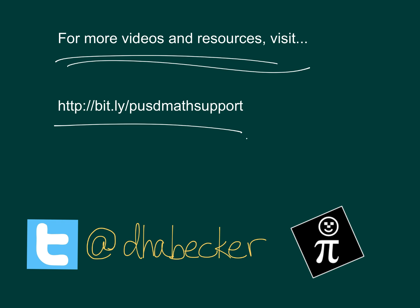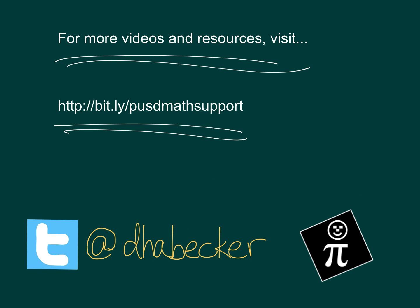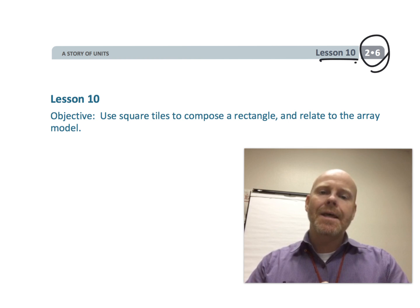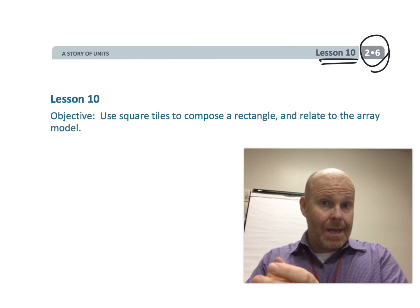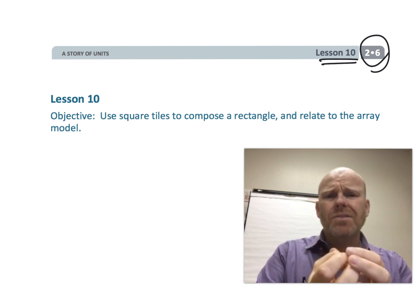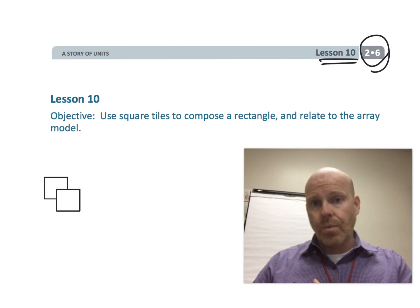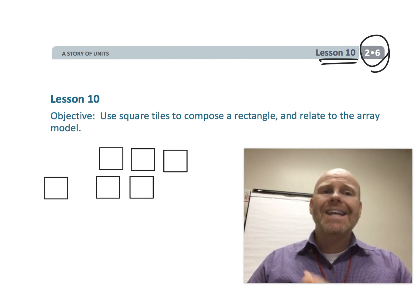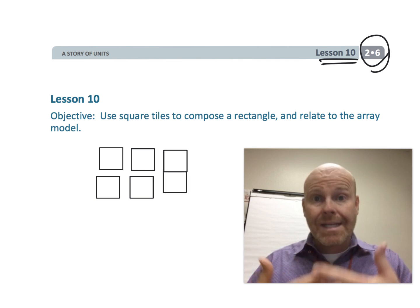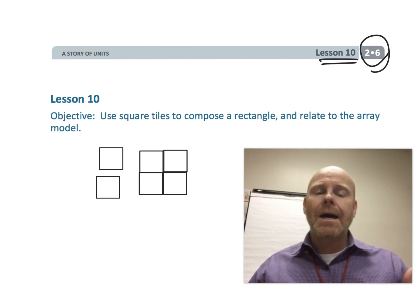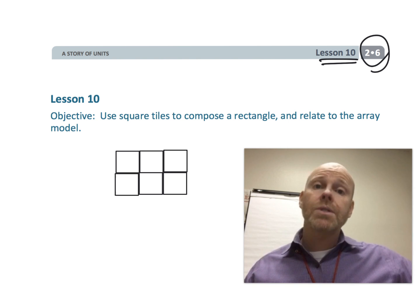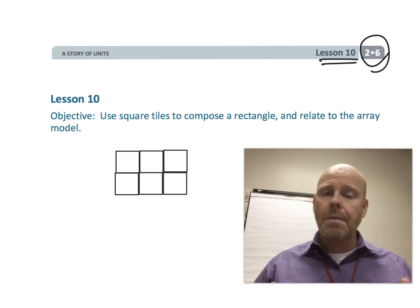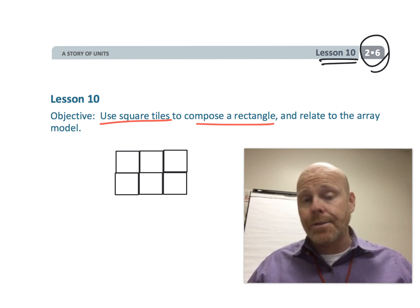This is second grade module 6 lesson 10. In this lesson we're taking the arrays we've been making — we started using color tiles or square tiles to make arrays, but the key was we had gaps in our squares. In this lesson we're officially building rectangles with our square tiles, no more gaps, as we incrementally move toward third grade and relating multiplication with the area model.